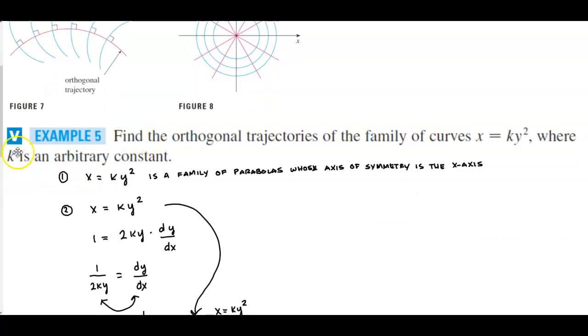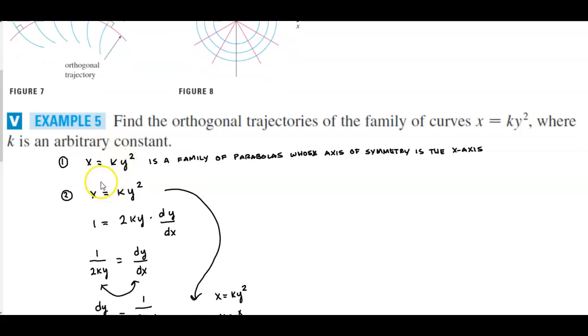In example number five we want to find the orthogonal trajectories of the family of curves x equals k times y squared where k is an arbitrary constant. For step number one, we know that this formula is a family of parabolas whose axis of symmetry is the x-axis.